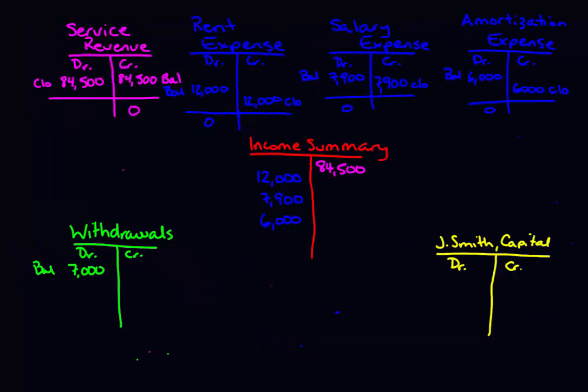Now let's go back to our T-accounts and figure out the total balance in our income summary account. Drawing a line at the bottom of the T: $84,500 minus $12,000 minus $7,900 minus $6,000 gives a balance of $58,600 credit. You want to stop here — if you have an income statement for this company, check whether the net income equals $58,600. If it's a credit balance, that means you have net income. If it's a debit balance, that means you're in a net loss position.